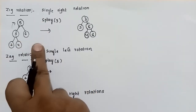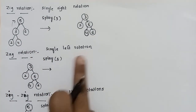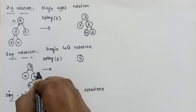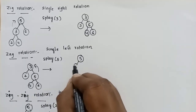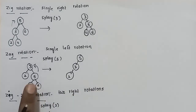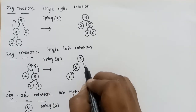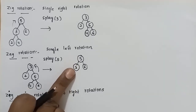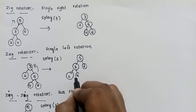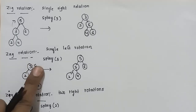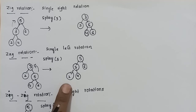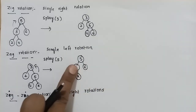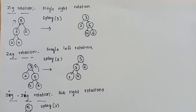Next is the Zag rotation, which is a single left rotation. We apply it to the right node. For example, 4 is less than 5, and 3 is greater than the target, so 3 goes right. We apply a single left rotation — the splaying operation gives us a balanced result. Left subtree height is 2, right is 1; difference is 1, so the tree is balanced.